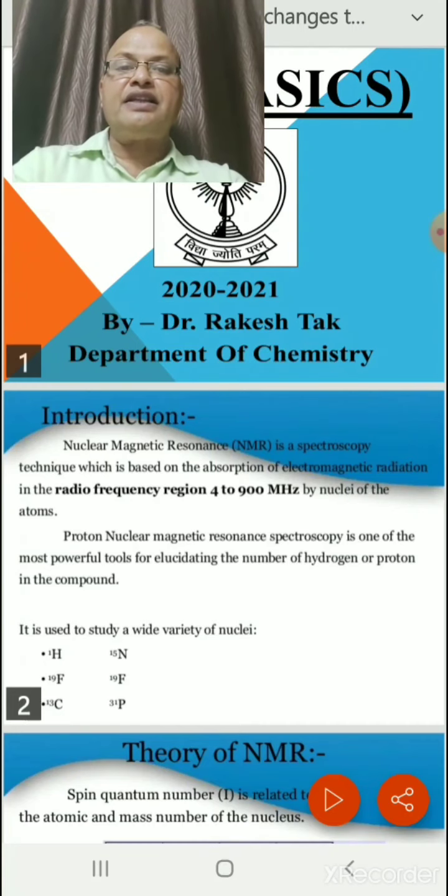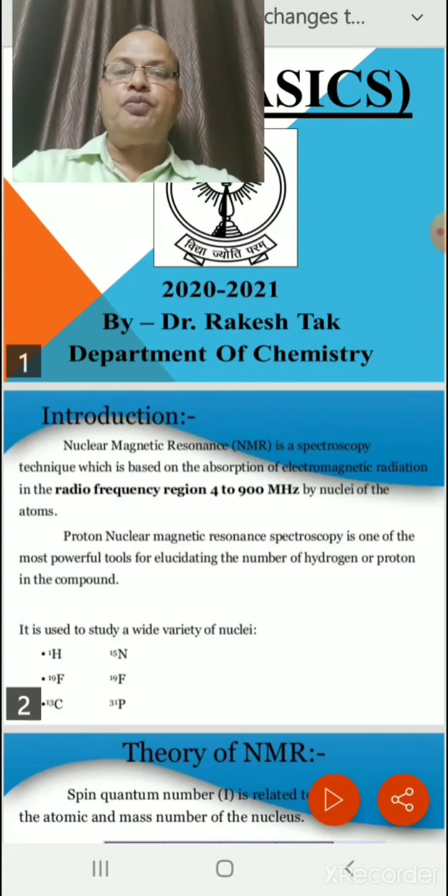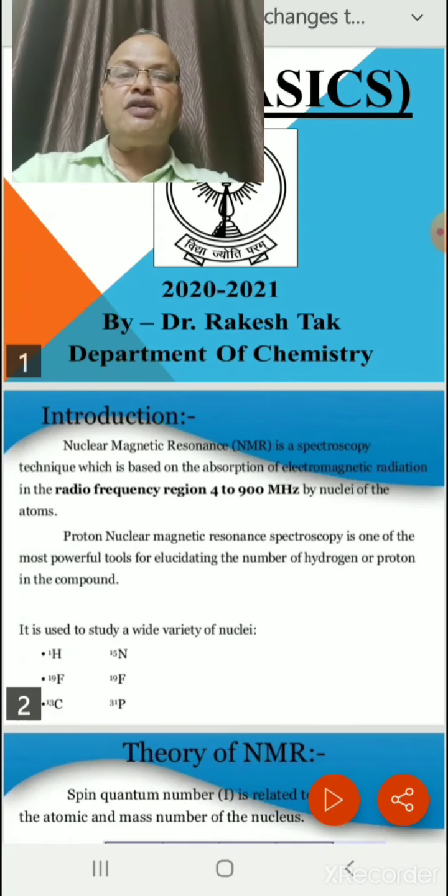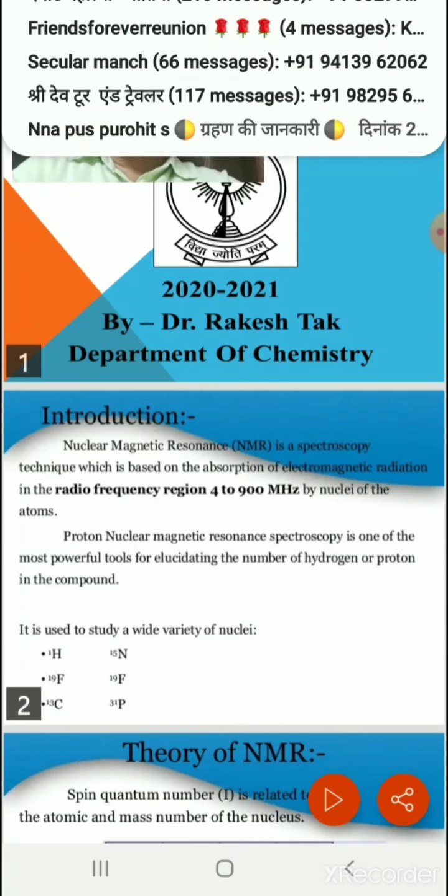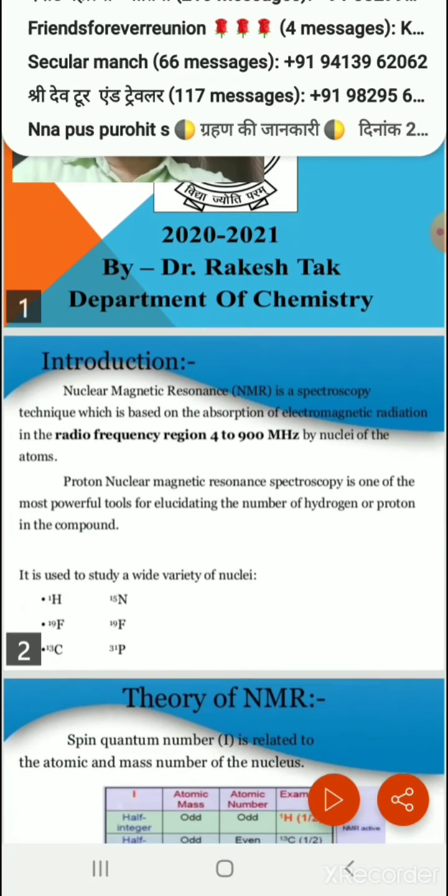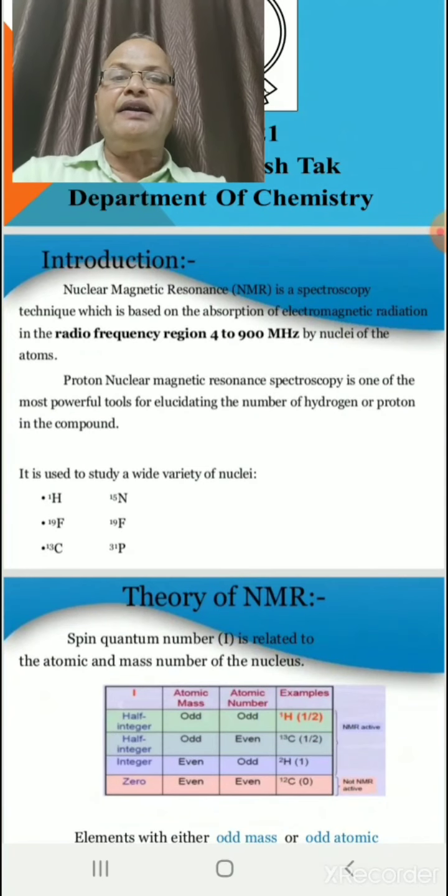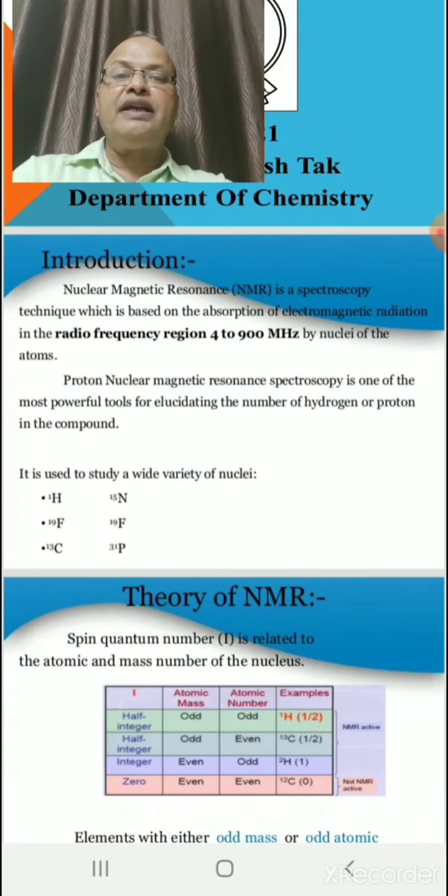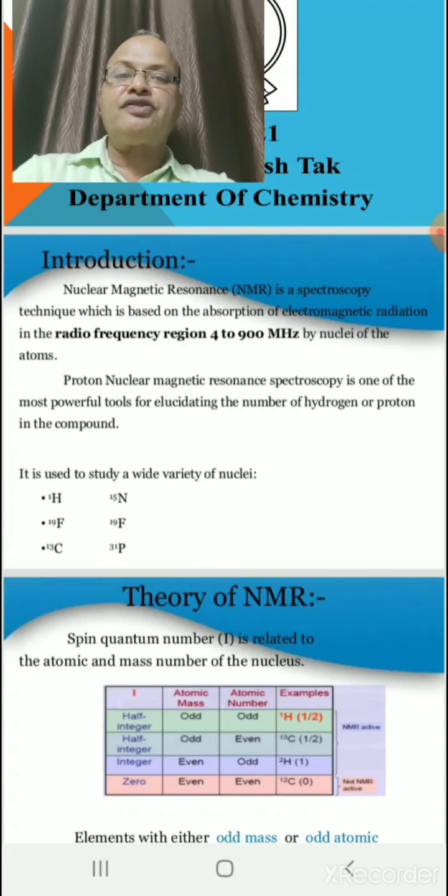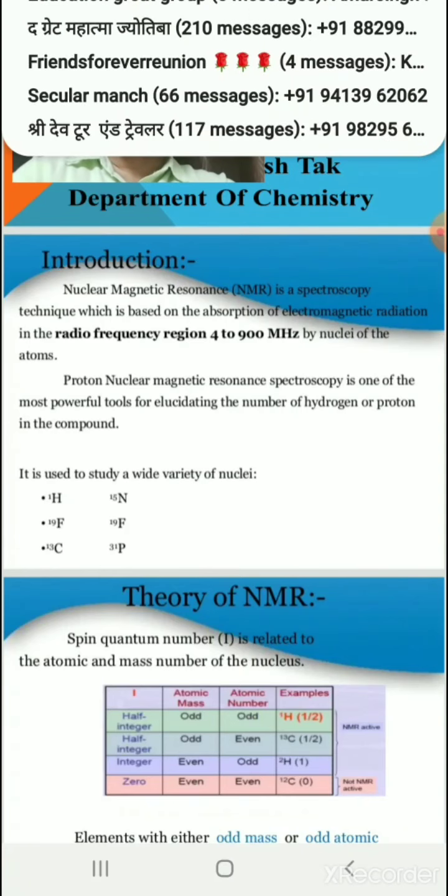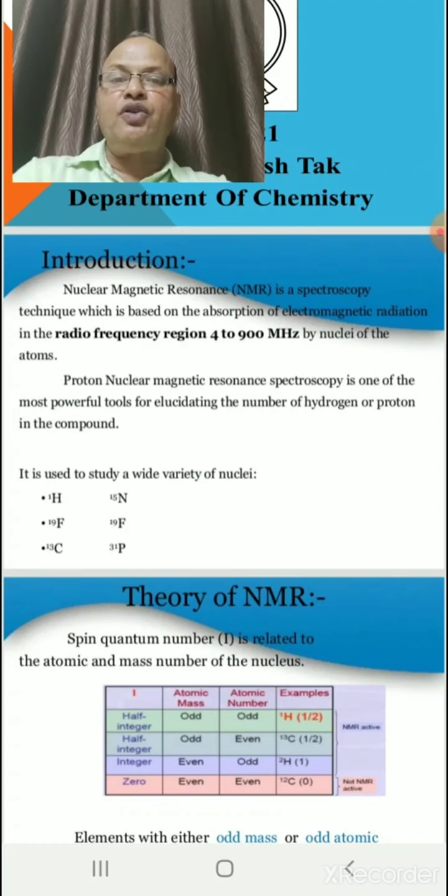NMR is a spectroscopy technique which is based on the absorption of electromagnetic radiations in the radiofrequency region that is 4 to 900 MHz by nuclei of the atoms. Proton nuclear magnetic resonance spectroscopy is one of the most powerful tools for elucidating the number of hydrogens or protons in the compound.